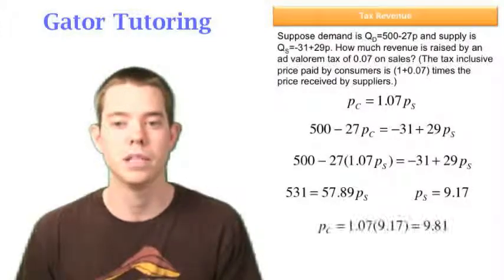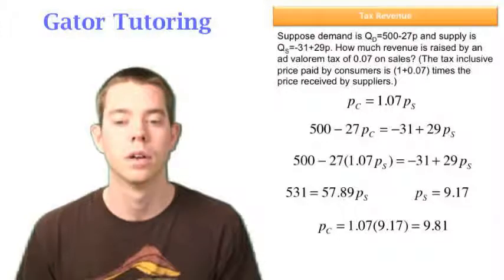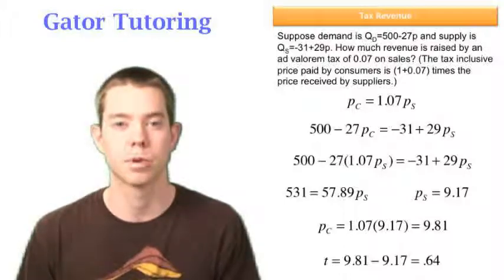So now we can solve for PC because we know it's just 1.07 times that. And in this case, that's 9.81. So how much was the tax? Well, 9.81 minus 9.17, we see that there's a 64 cent tax per unit.